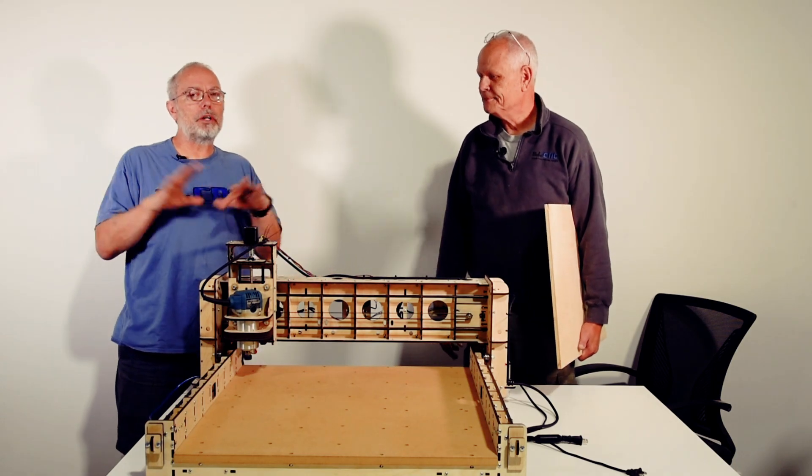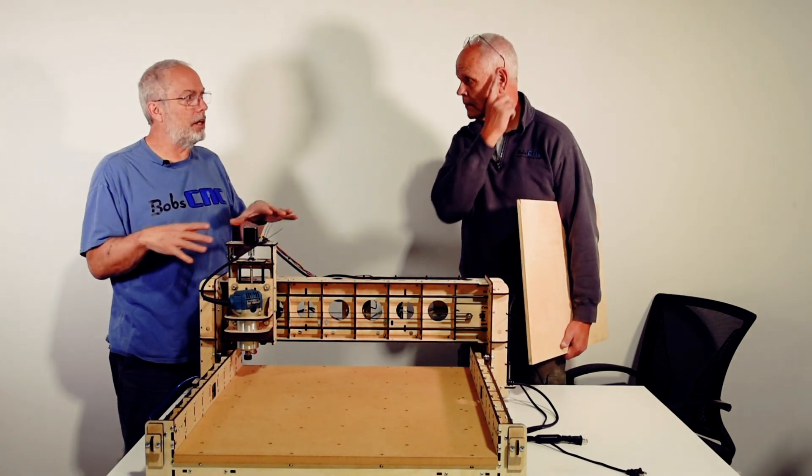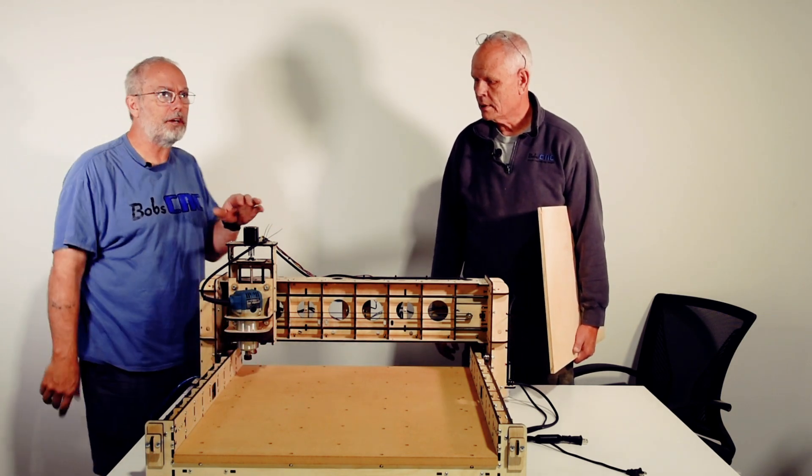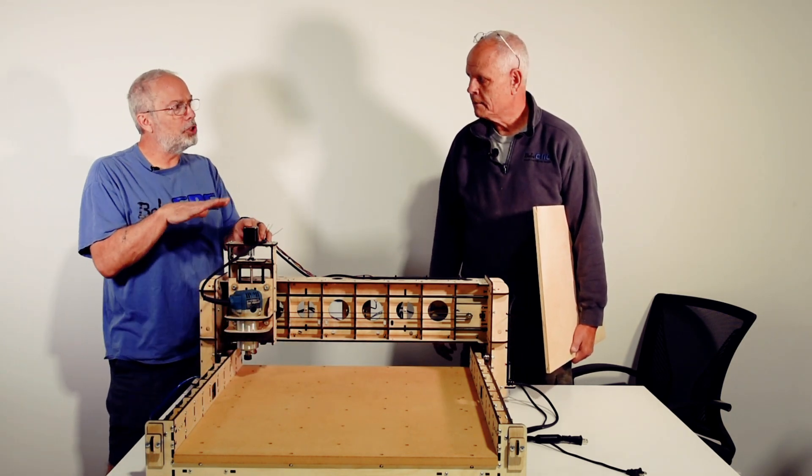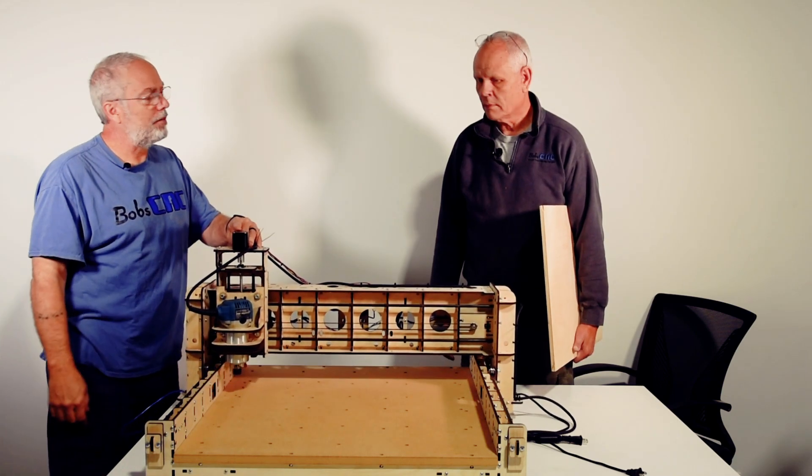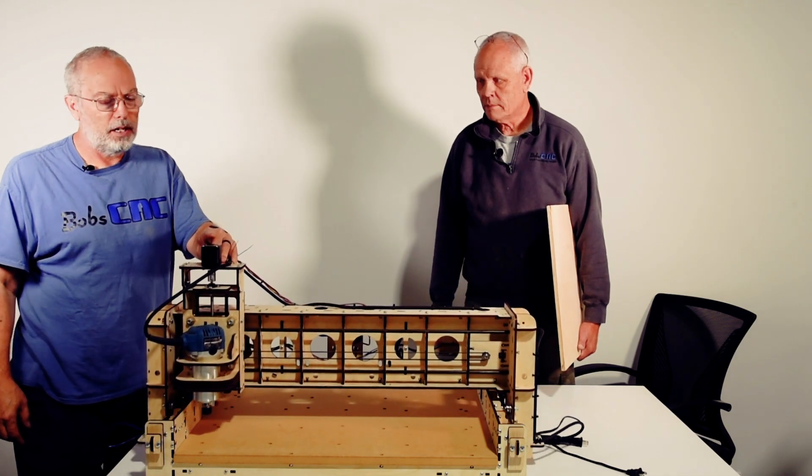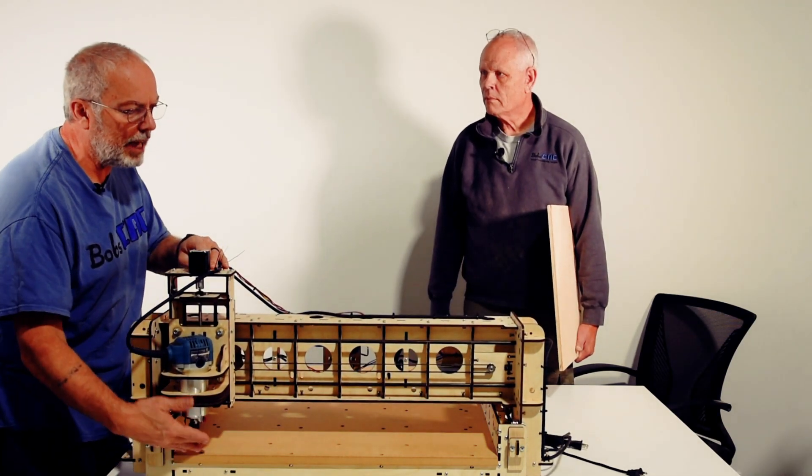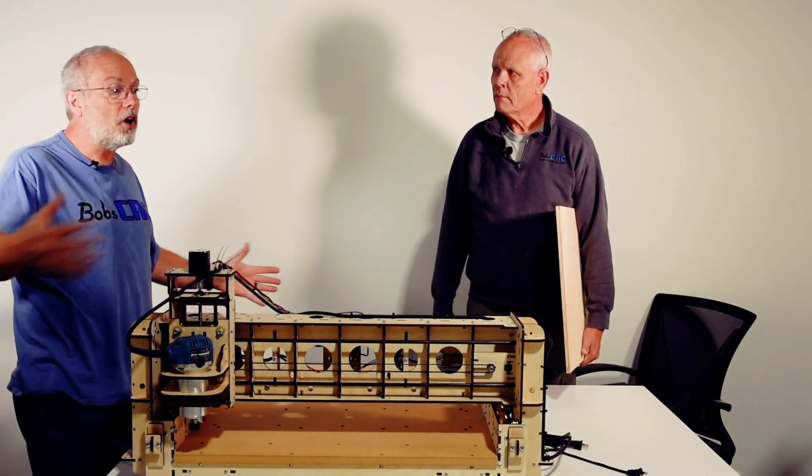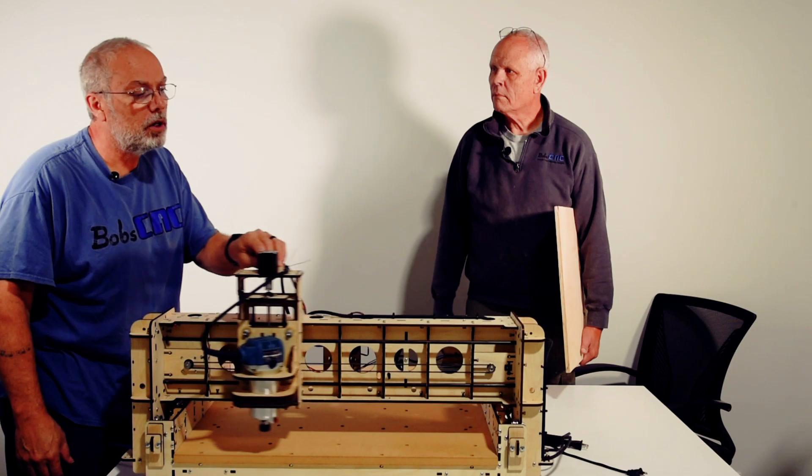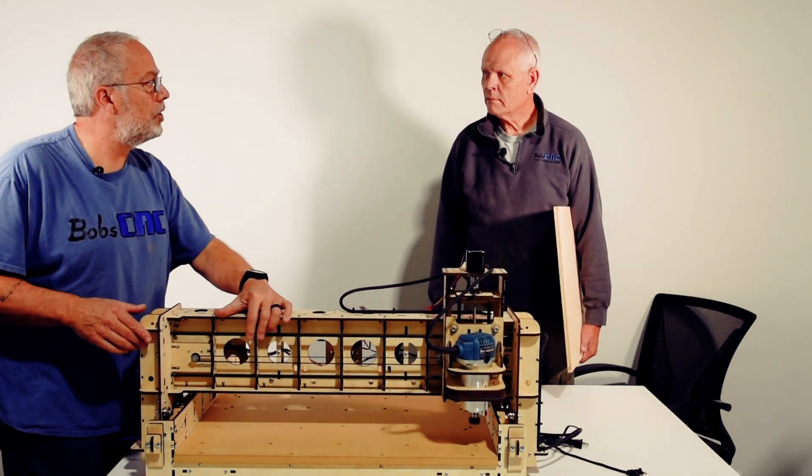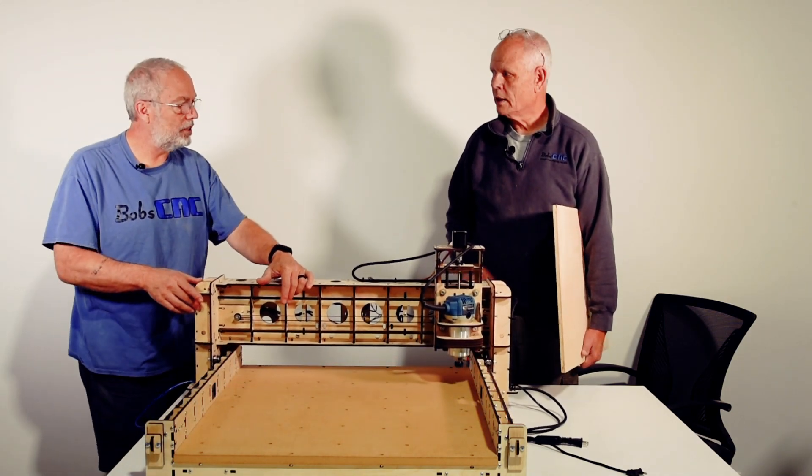So the next thing that you could do, if you want to explore how big your cutting area is or where the cutting area is, if you have a bit here, which we don't, but if you had a bit that was poking down, right? And you've homed your machine, you could actually tell it to go 24 inches. If you have the Evolution 4, right? Right. And then it would go to here, right? And you can see that it's actually a little bit even off the cutting surface. So that would be as far as the X you can go. And then you could go 24 inches in the Y, right?